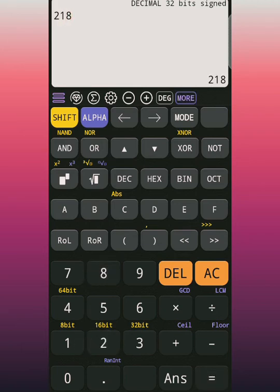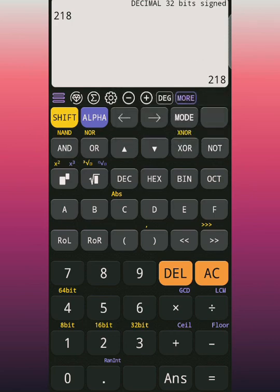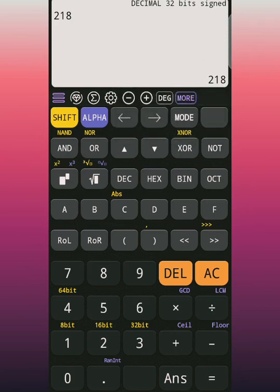So equal to your answer - it gives you 218. So the next thing to do to convert to a binary, you press this binary - yes this binary here. Once you click on it, it gives you the value of 218 in its binary form.